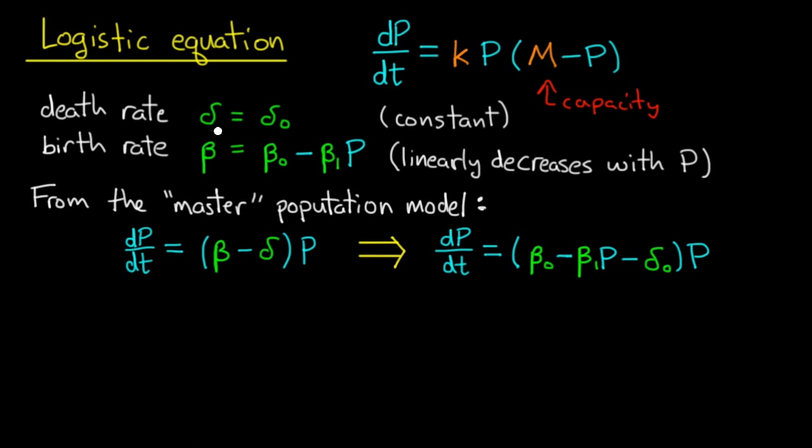We'll take the death rate constant equal to delta zero and the birth rate equal to beta zero minus beta one times P. Beta zero and beta one constants. And let's plug those in for beta and delta. And what do we get? We get dP/dt is equal to beta zero minus beta one P minus delta zero times P.